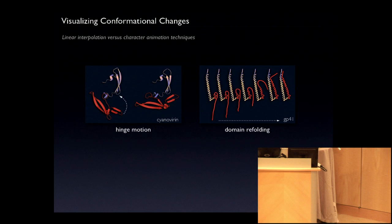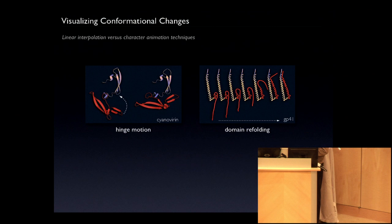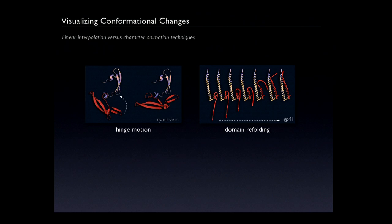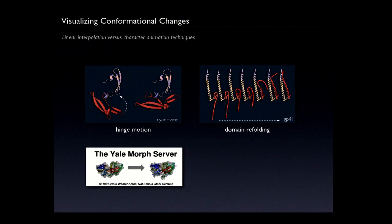Also in the realm of protein dynamics is how proteins change shape — the whole area of conformational changes, which is intimately tied to our understanding of function and how proteins change structure over time in relationship to binding partners. There are different kinds of protein conformational changes and different types of tools. For relatively straightforward hinge-type motions, there are resources like the Yale Morph server, which gives you one plausible path for how a structure might morph between two known crystallographic states.